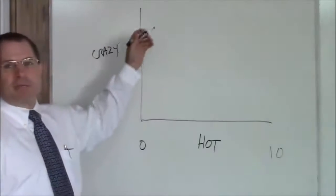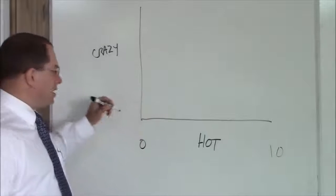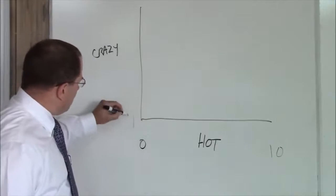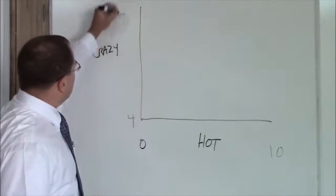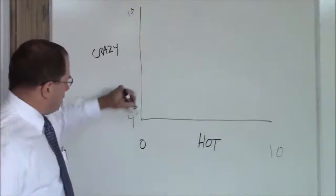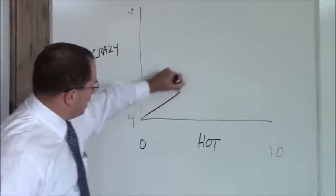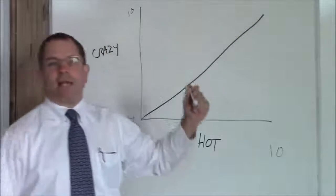Hot is as usual measured from 0 to 10. We're all familiar with that. Crazy is measured from 4 to 10 because of course there's no such thing as a woman who's not at least a 4 crazy. So you've got 4 to 10. This is your Hot Crazy line right here. Very important that you keep in mind where the Hot Crazy line is.